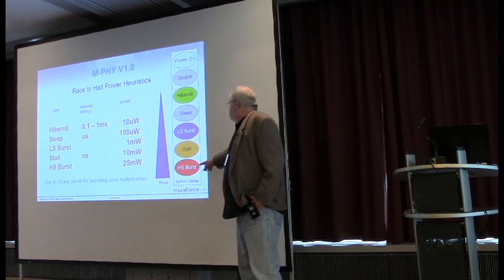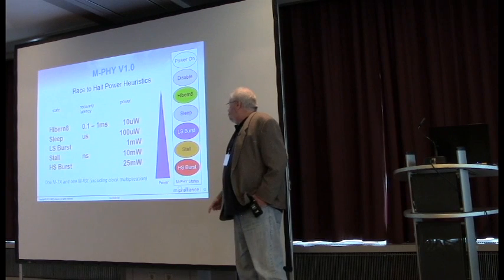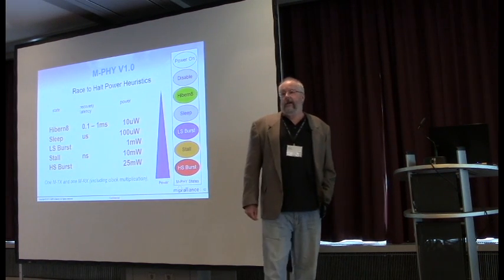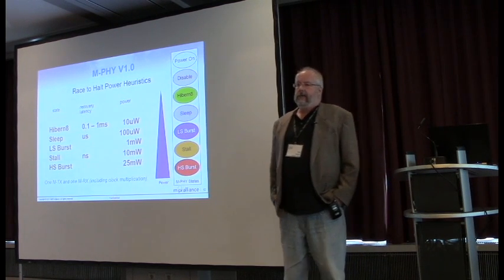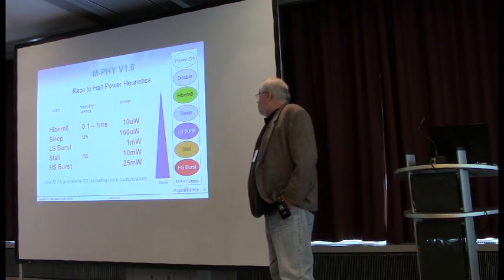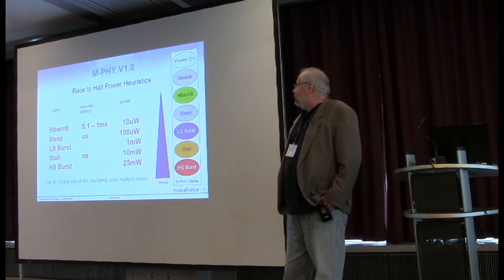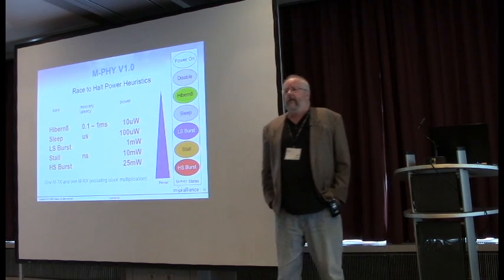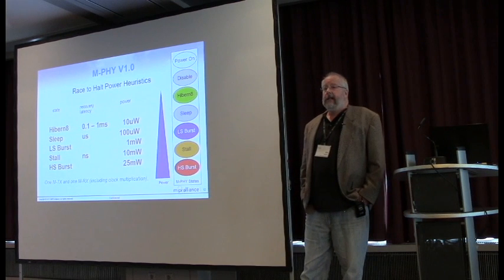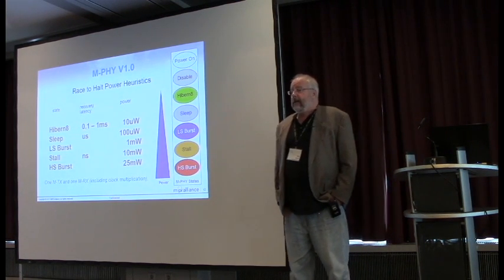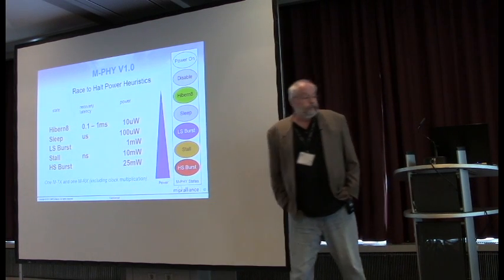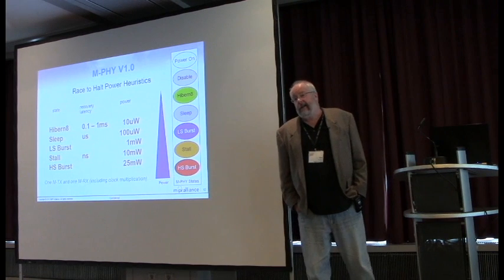You can see that based on the state, we have extremely low power. These numbers are with one transmitter, one receiver, and all the circuitry necessary for clock multiplication — that would be the PLL and distribution. The idea is that this is a physical layer well matched to the mobile terminal — a phone or a tablet — something that operates off a battery, doesn't have a great deal of power to spare, and would like to hibernate and go into very low power mode as quickly as possible, then resume the minute there's something going on: a phone call, somebody just touches the screen.